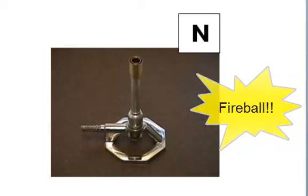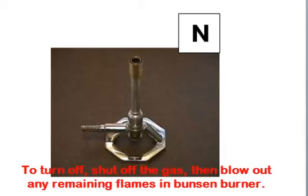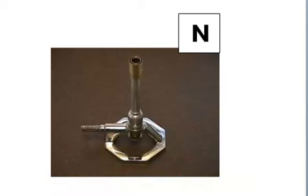The rule is light the match, then turn on the gas. To turn it off, you want to turn off the gas and then give it a little blow. That just ensures that any remaining flames are out. We're gonna be working with Bunsen burners with two people. One person's gonna be operating the gas nozzle that I'll show you in class. The other one is gonna be lighting the match. So your goal is to light it with one match by January.